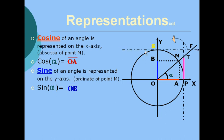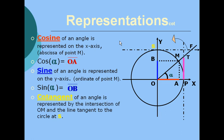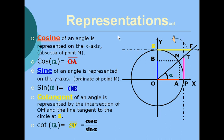Now we come to the cotangent. We draw a line tangent to the circle and perpendicular to the y-axis at the point of tangency S. This axis is called the cotangent axis. Cotangent of an angle is represented by the intersection of OM and the tangent line at S. Cotangent is also represented by cosine alpha over sine alpha.